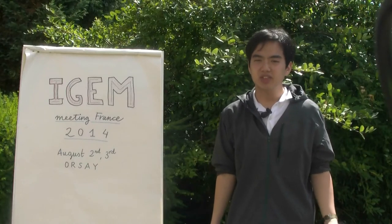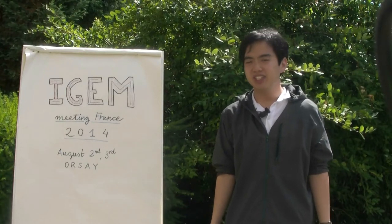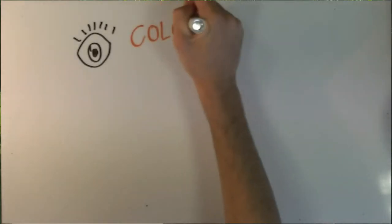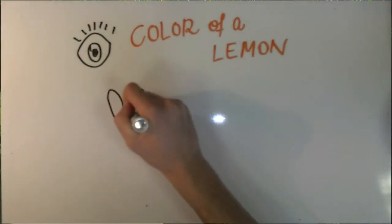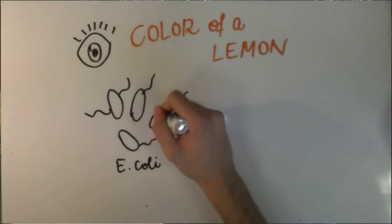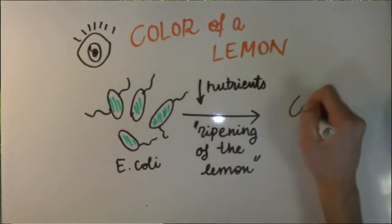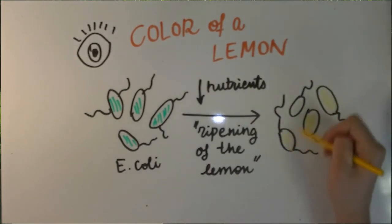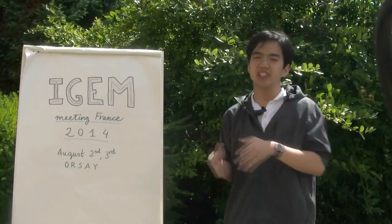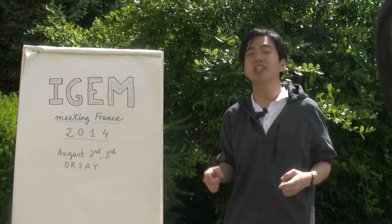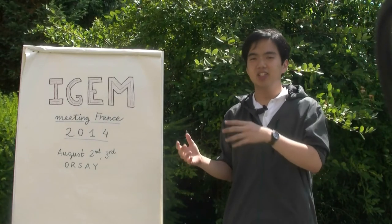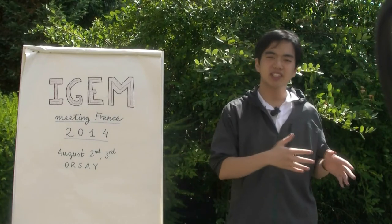There are several underlying principles we could discuss, the first being color. Our bacteria will start off green and as time goes by the bacteria will consume the food in their media. So as the amount of food decreases, so will their color change from green to yellow, as would a real lemon in real life which ripens from green to yellow.